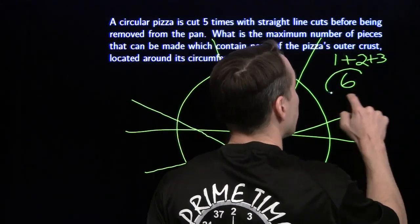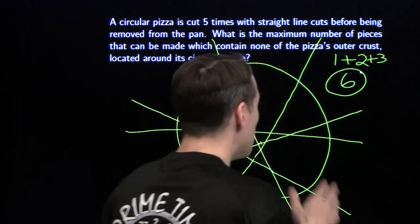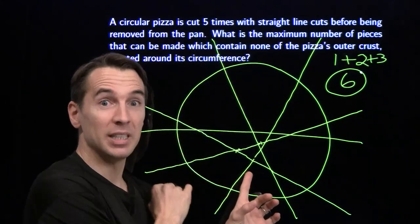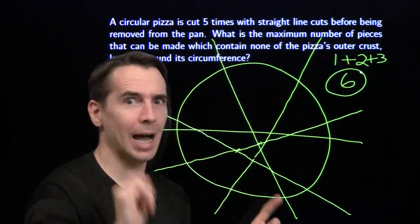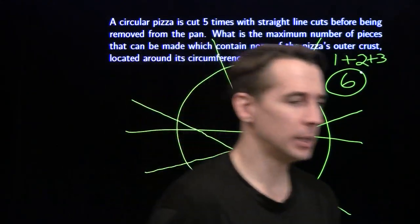So our constructive counting tells us that there are six yummy pieces of pizza — and I'm going to go eat them.